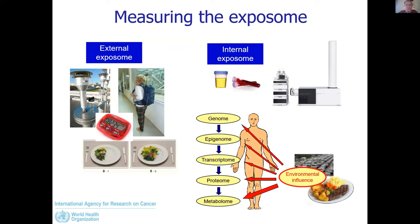Measuring the exposome is just challenging. The exposome can be measured externally with different sensors or questionnaires, and it can also be measured internally with human biospecimens like blood or urine. We have today modern equipment like mass spectrometers that allow collecting much information from samples stored in biobanks. It can be captured with different omic dimensions, from the epigenome down to the metabolome, to capture information on environmental influence. Today it's difficult to dissociate research on the exposome from all these omic technologies.